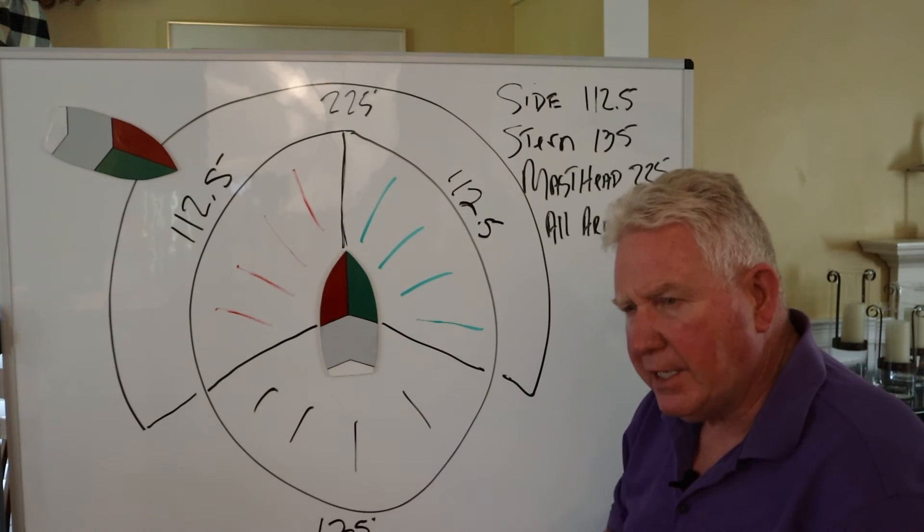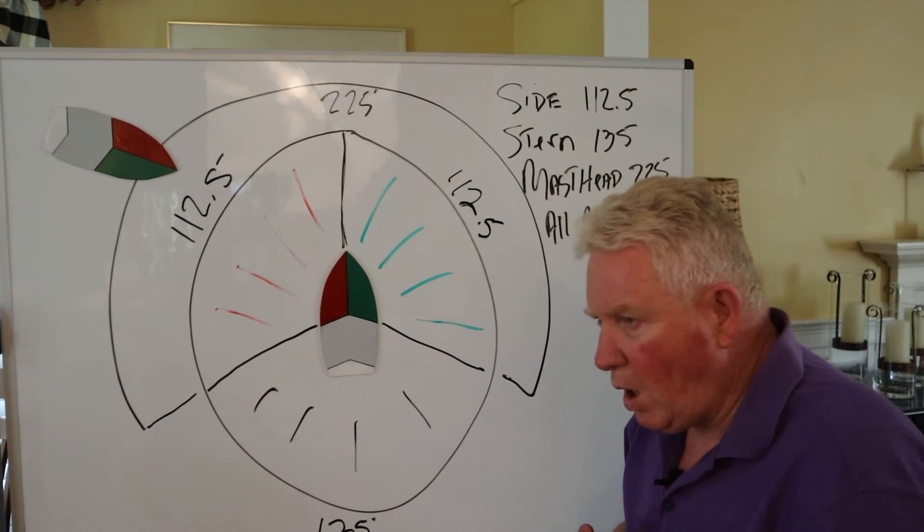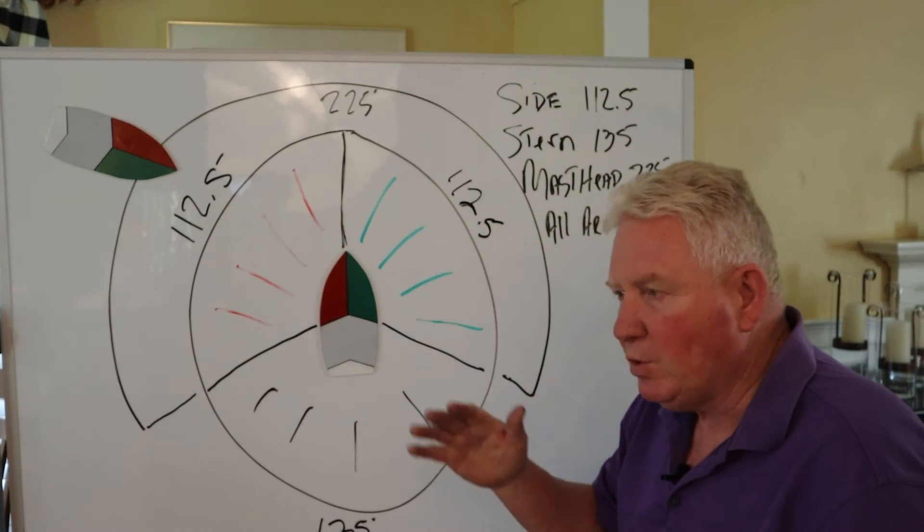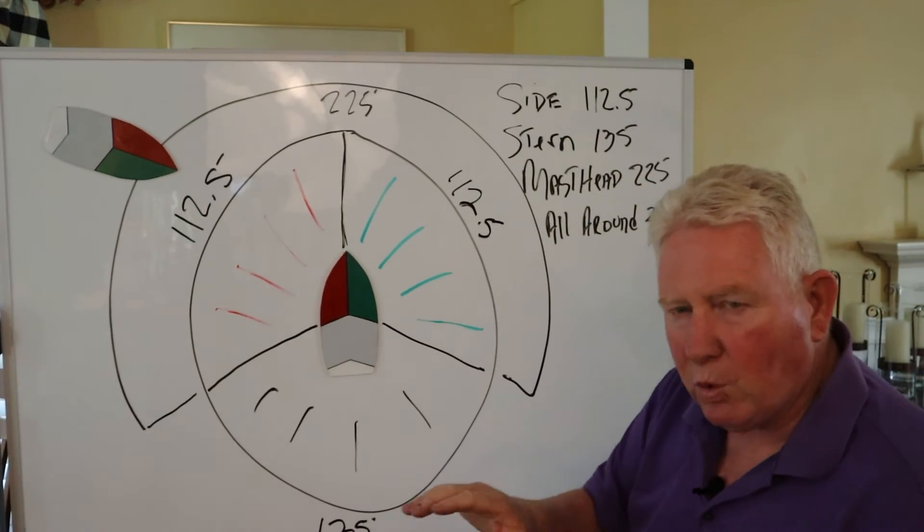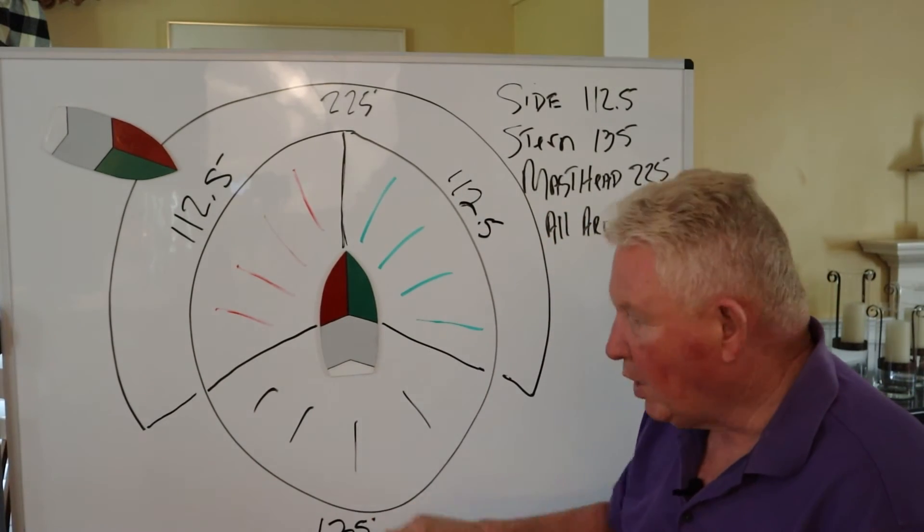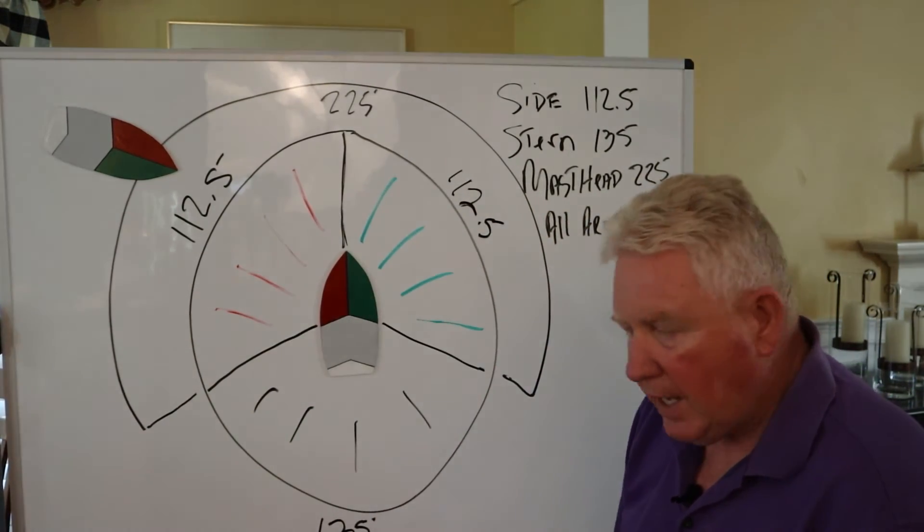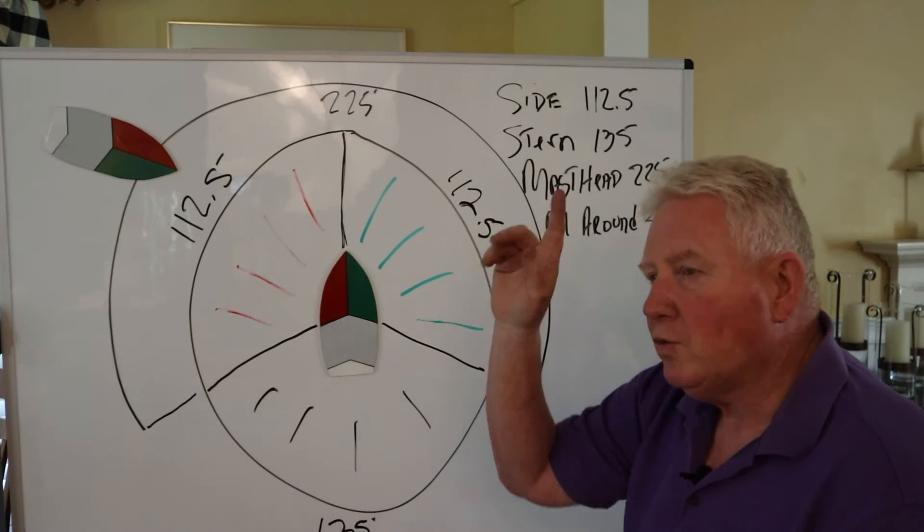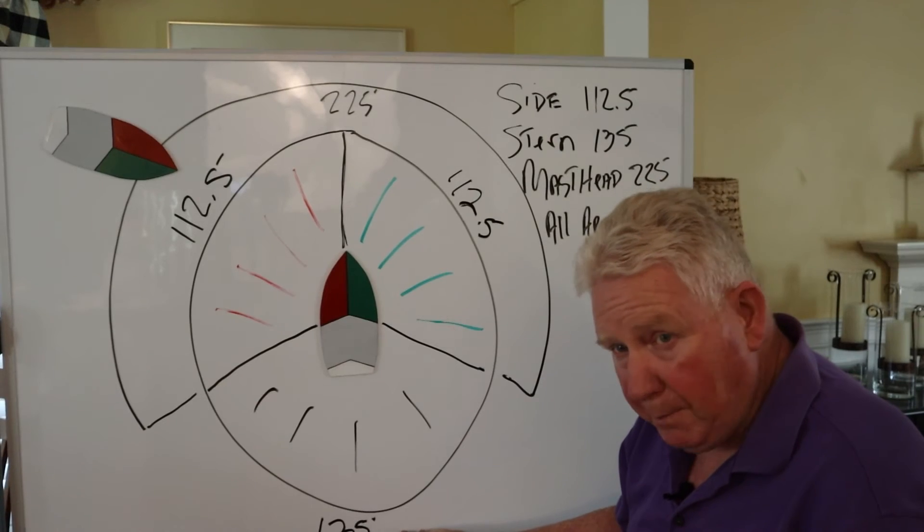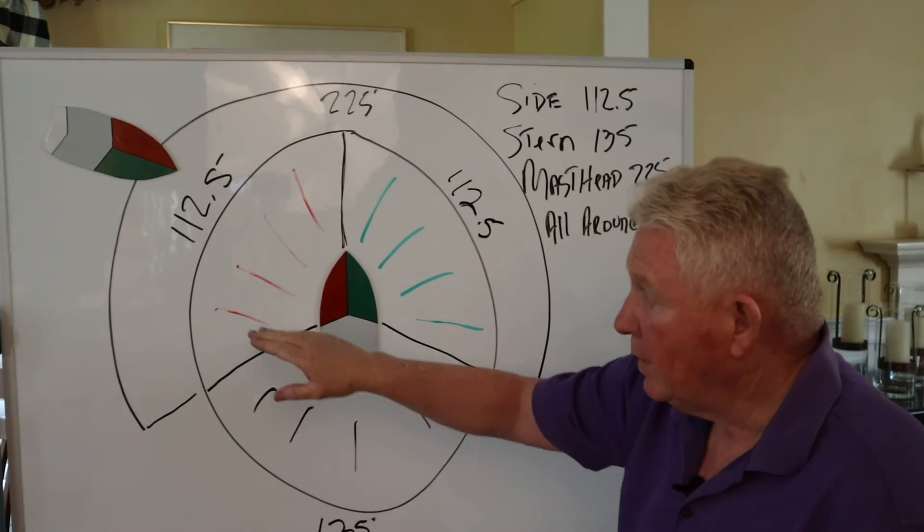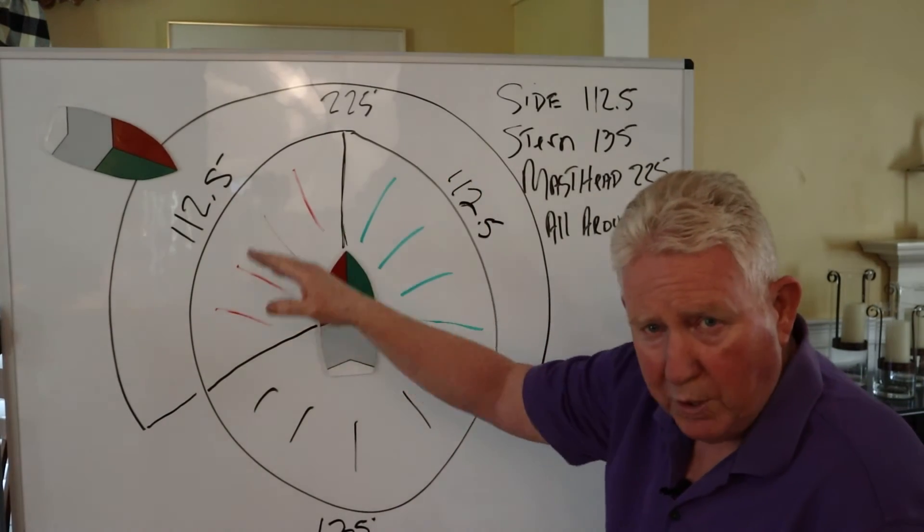One of the things that is not so obvious, if you understand this, these masthead lights, the 225 are white. So on your boat you have side lights going off and you have an all-around white light. It encompasses this 135 but it also takes care of your 225.